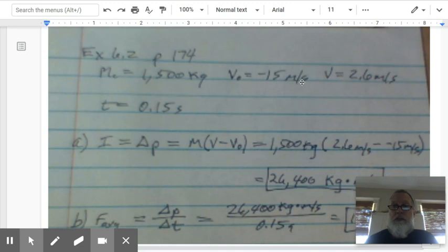It goes from negative 15 meters per second to 2.6 meters per second. So the total change in momentum is 17.6 meters per second. This collision takes place over 0.15 seconds.